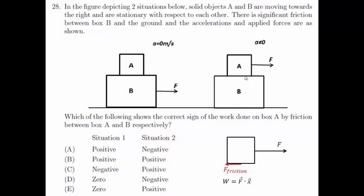Now we know that W equals the dot product of the force times the displacement. And since the frictional force and the displacement of the block which is to the right are in opposite directions, the work done by the frictional force is negative.